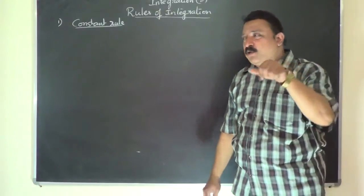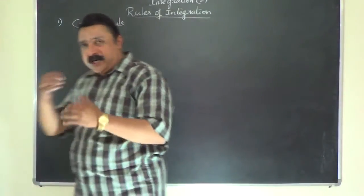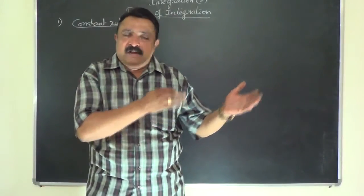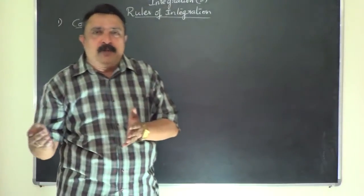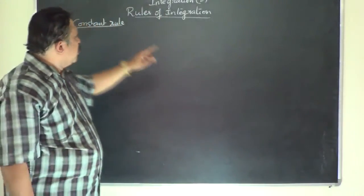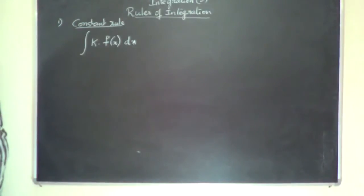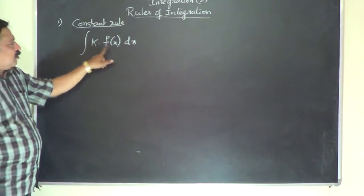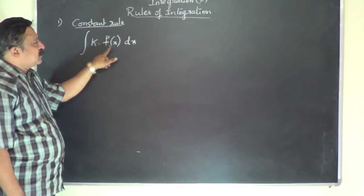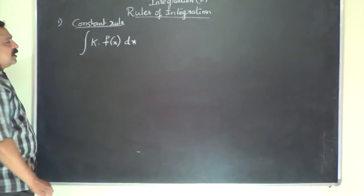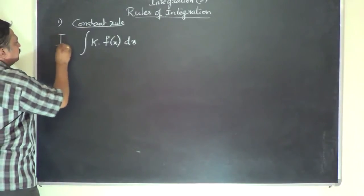Regarding the constant rule — when I discussed the constant of integration, I mentioned that after you finish the process of integration, once the integral symbol is no longer seen in the problem, you should add the constant c. Now here I want to focus on a constant k which is present along with a function f(x) integrated with respect to dx. k is a constant, or the coefficient of f(x).